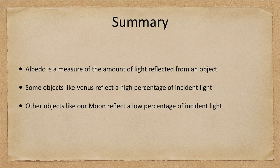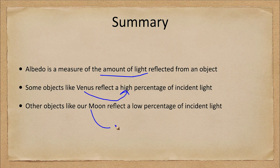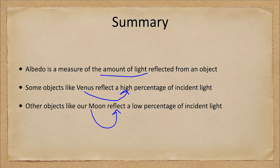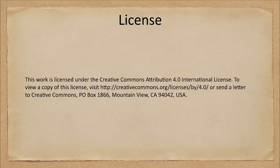To conclude, we talked about the definition of albedo as a measure of the percent of the light reflected from an object. Some objects like Venus reflect a high percentage of light, while our Moon reflects a low percentage. This depends on the composition: Venus has bright clouds that reflect a lot of light, while the Moon has dark rocks which absorb light and reflect very little. That concludes this special topic on albedo — we'll be back again next time for another special topic in astronomy. Until then, have a great day everyone and I will see you in class.